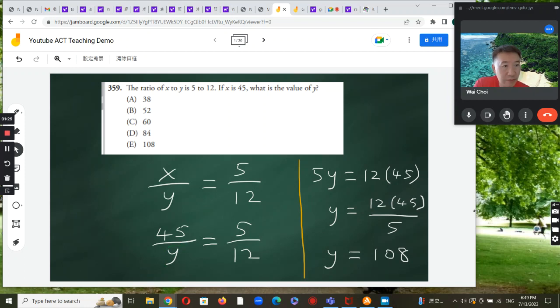All we need to do is simply do a cross multiplication. We can multiply y by 5. We can then multiply 45 by 12. So this equation will become 5y equals 12 times 45.